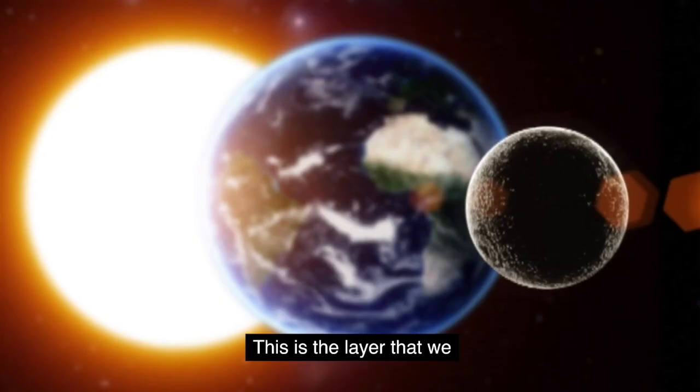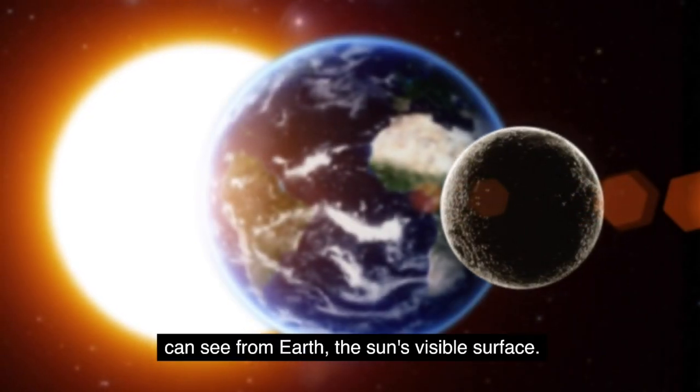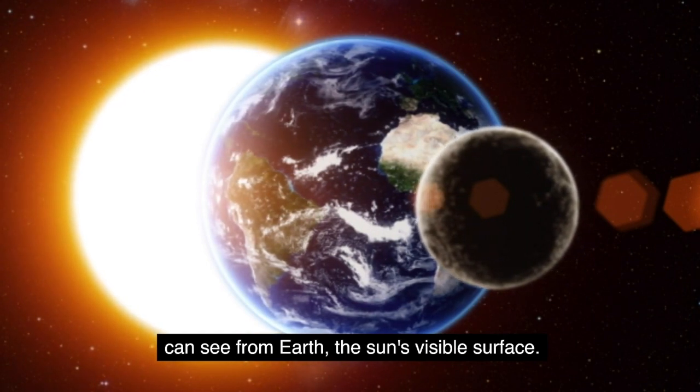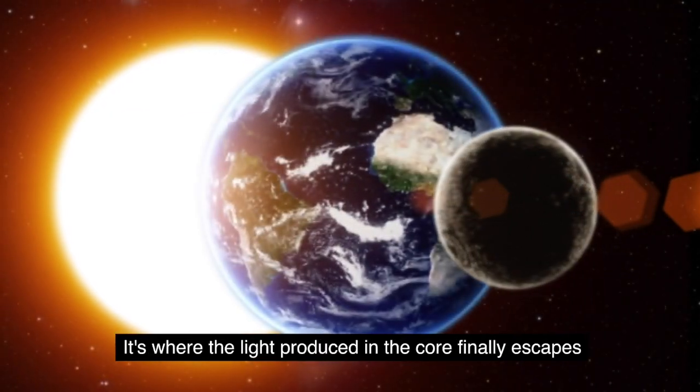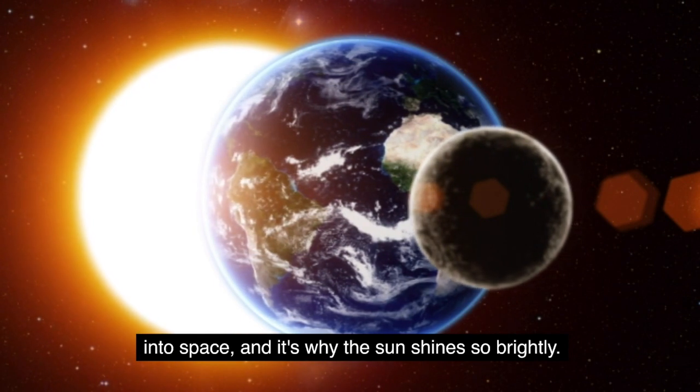This is the layer that we can see from Earth, the sun's visible surface. It's where the light produced in the core finally escapes into space, and it's why the sun shines so brightly.